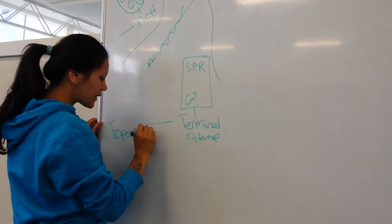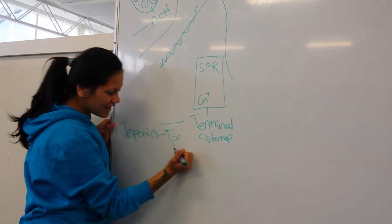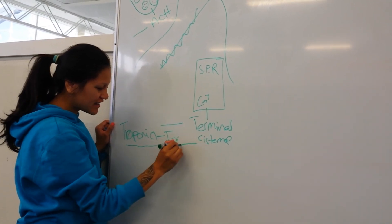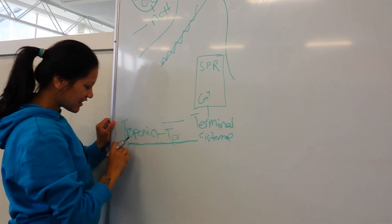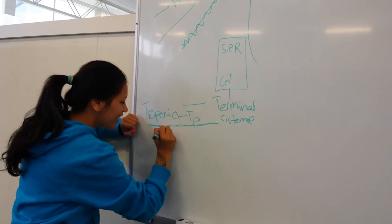This causes the troponin to pull the tropomyosin out of the way of the binding sites on the actin.